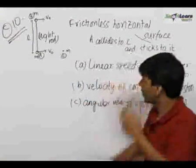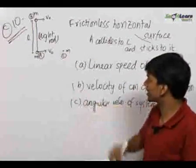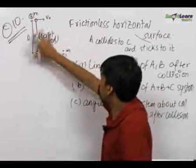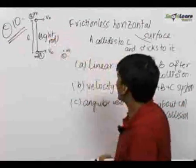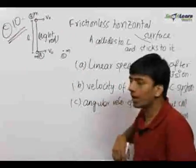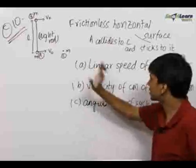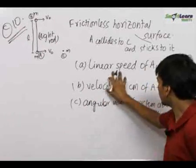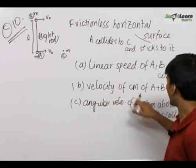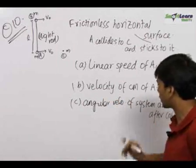In question 10, we have a light rod connecting two masses, each of mass m, each moving with velocity V0. This whole system is moving on a horizontal frictionless surface, and in the path comes a small mass of mass m. A collides with C and sticks to it. We need to find the linear speed of A and B after the collision, the velocity of the center of mass of the A+B+C system, and the angular velocity of the same.